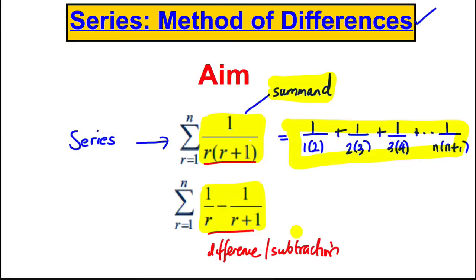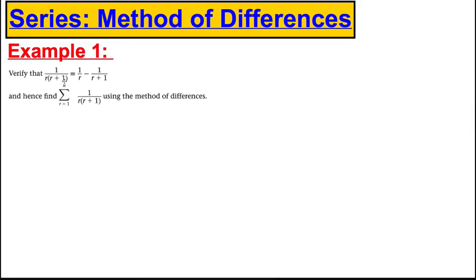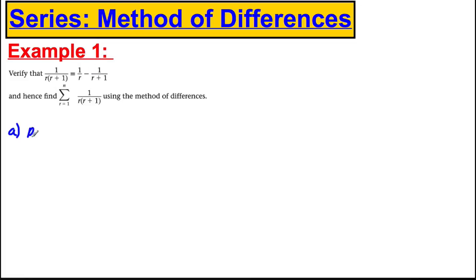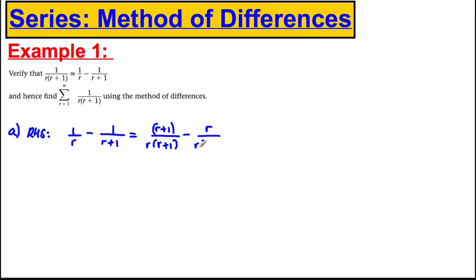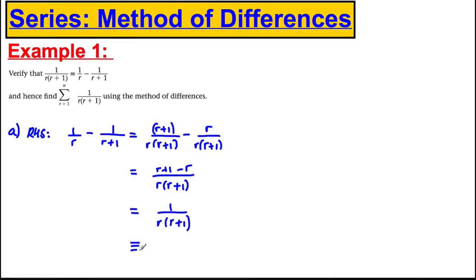So straight to Example 1. Firstly, we're asked to verify that 1/(r(r+1)) is the same as 1/r − 1/(r+1). Starting with the right-hand side: 1/r − 1/(r+1). Making the denominators the same, we get (r+1)/(r(r+1)) − r/(r(r+1)), which gives (r+1−r)/(r(r+1)) = 1/(r(r+1)), which is identical to the left-hand side. So we've proved what we needed.